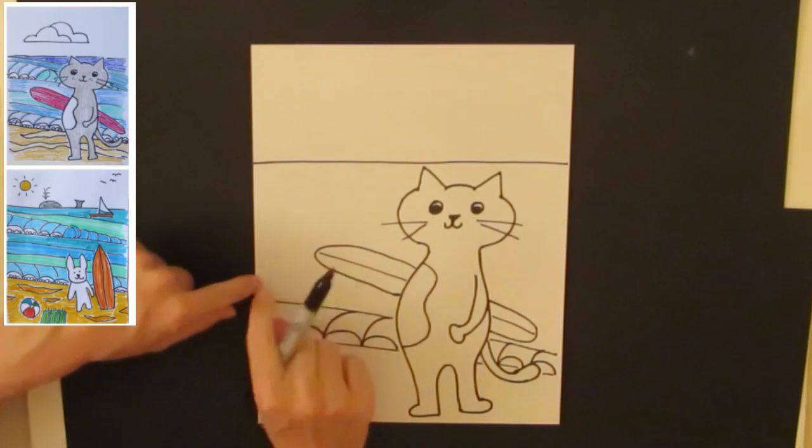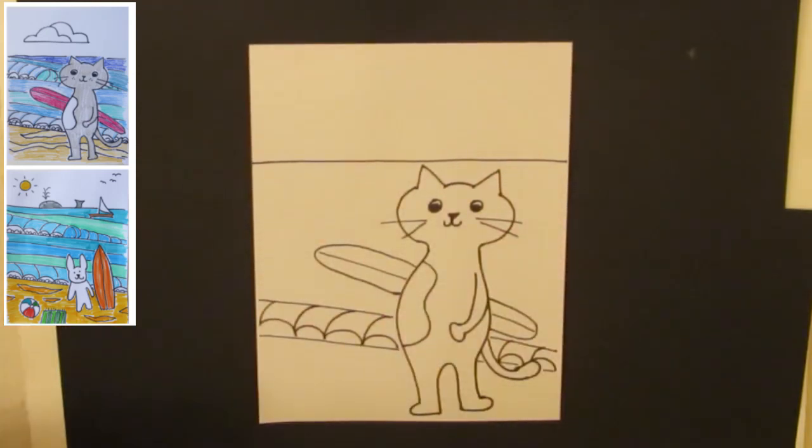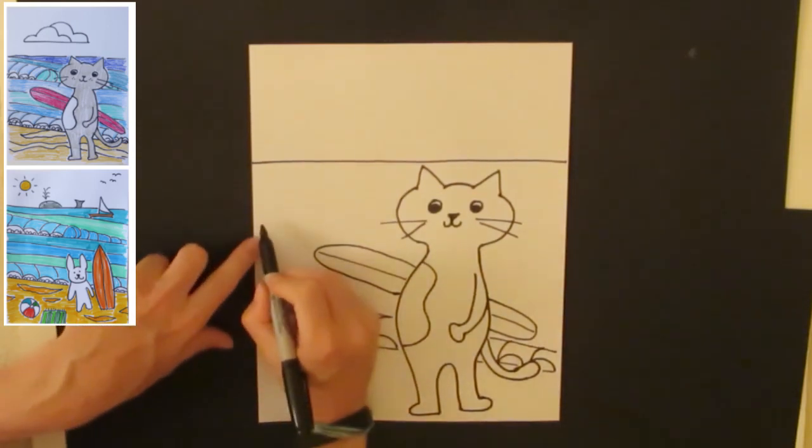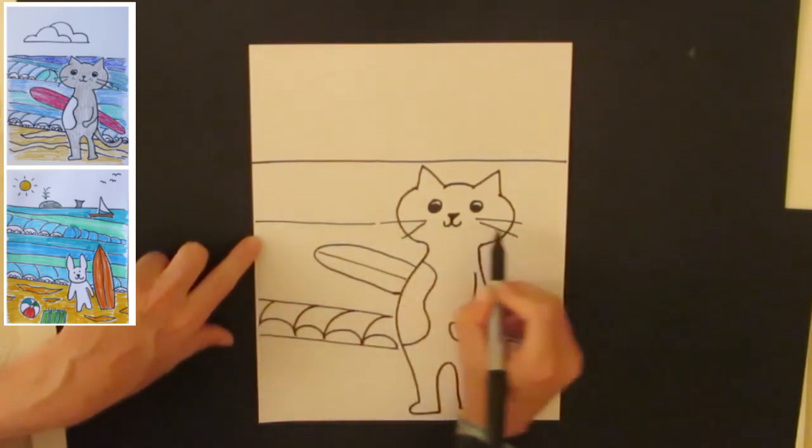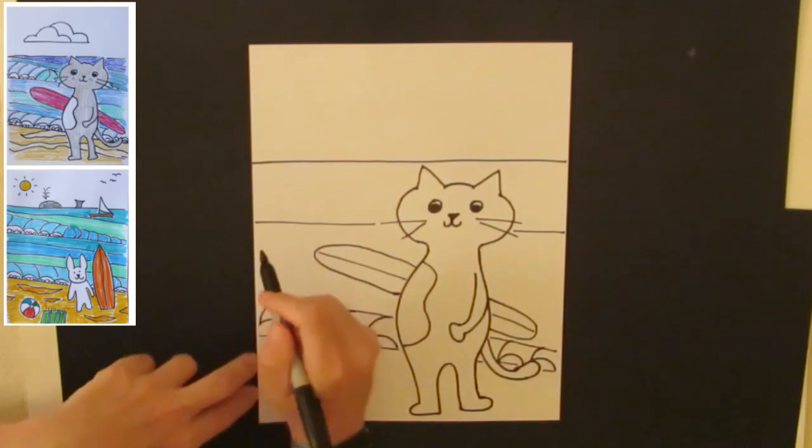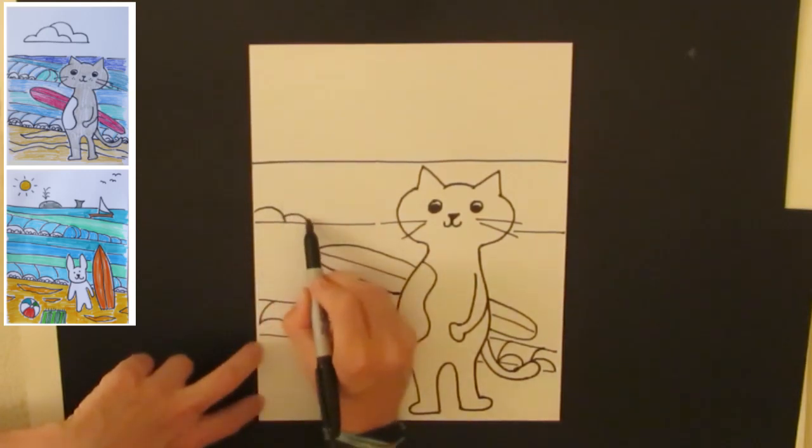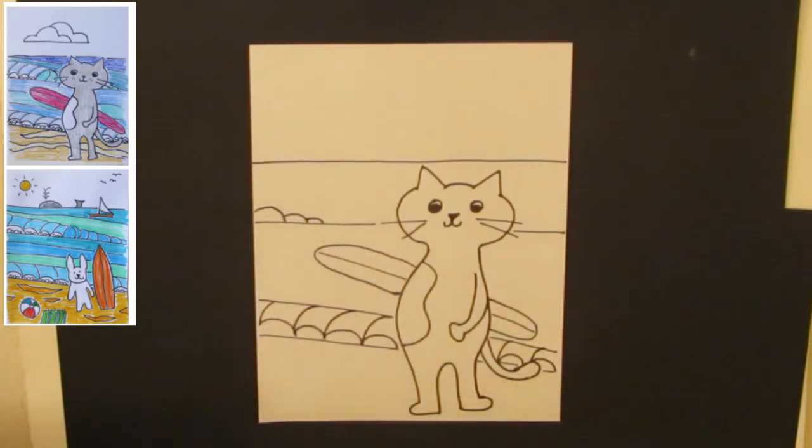Now you could leave it like this and just have this water or have some lines in here for water. I'm going to add an extra wave if you want to try that. So this is going to be where the wave is kind of crashing or forming. And I'm going to have it just starting to crash. So here's the first giant splash. Here's a little splash and it's just starting to form. So a little one there.